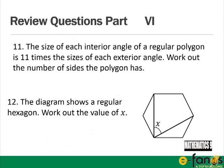Part 6: Each interior angle is 11 times each exterior angle; work out the number of sides. Answer: 11x + x = 180, so the polygon has 24 sides. For a regular hexagon, work out x. By forming a triangle, it's equilateral, so x = 60 degrees.